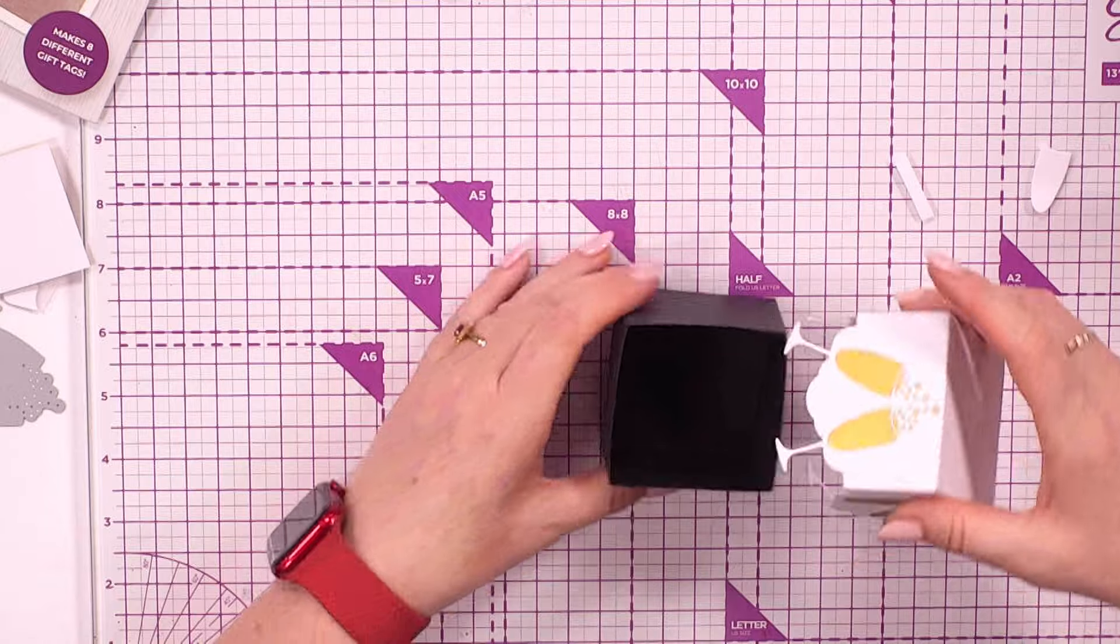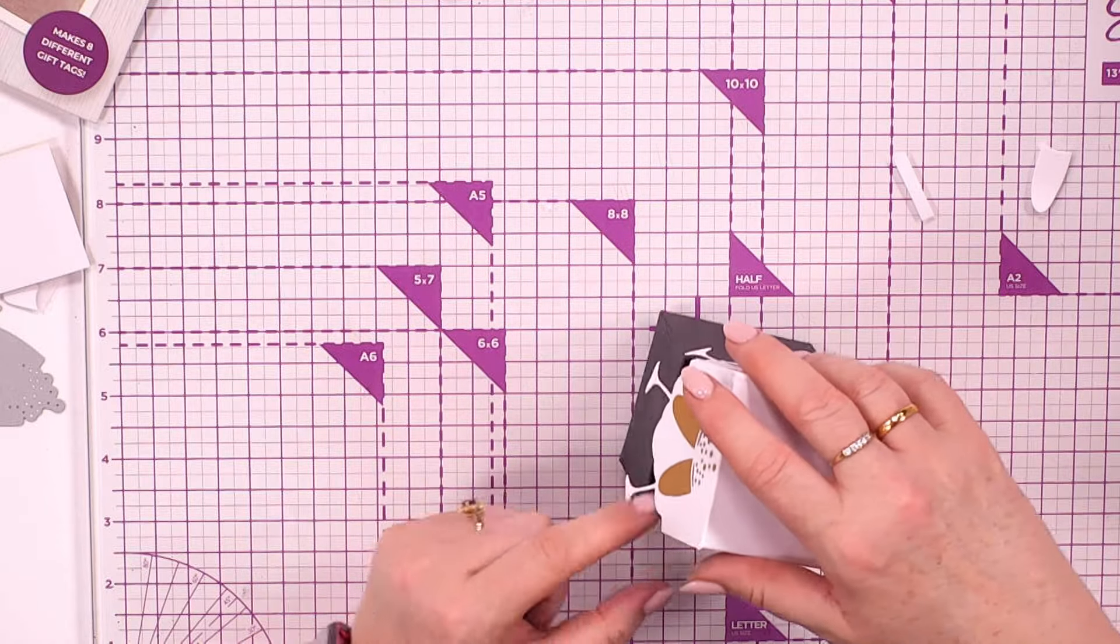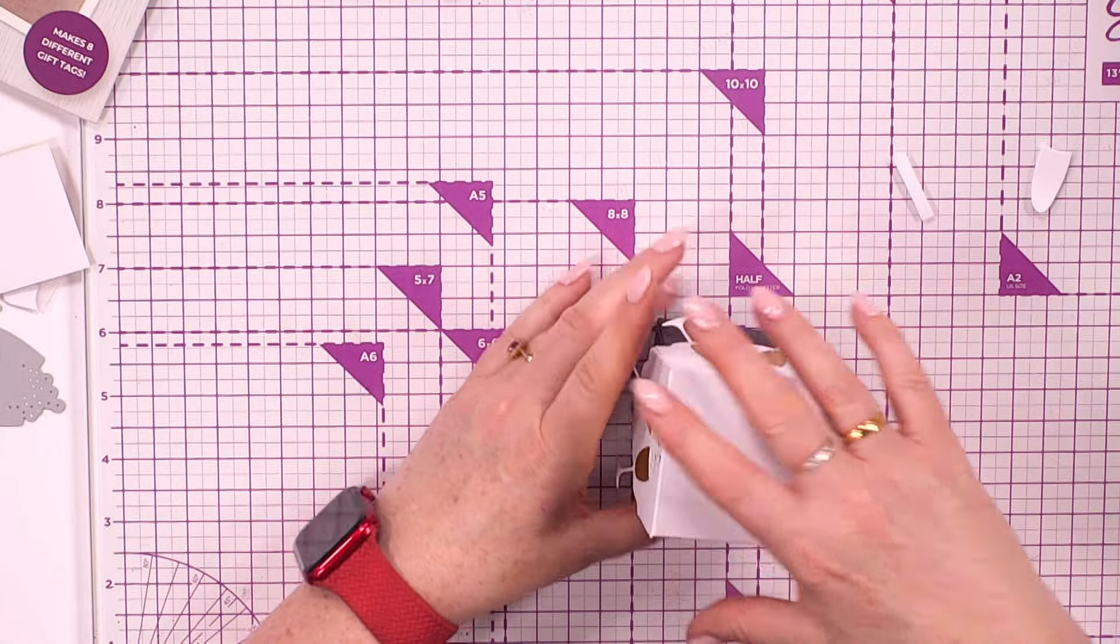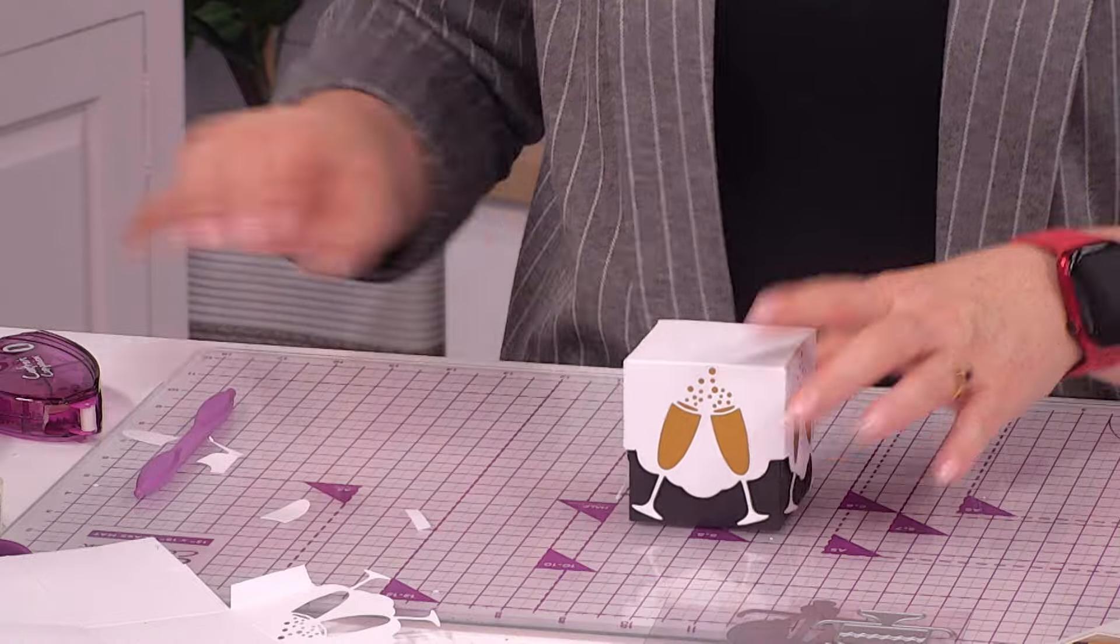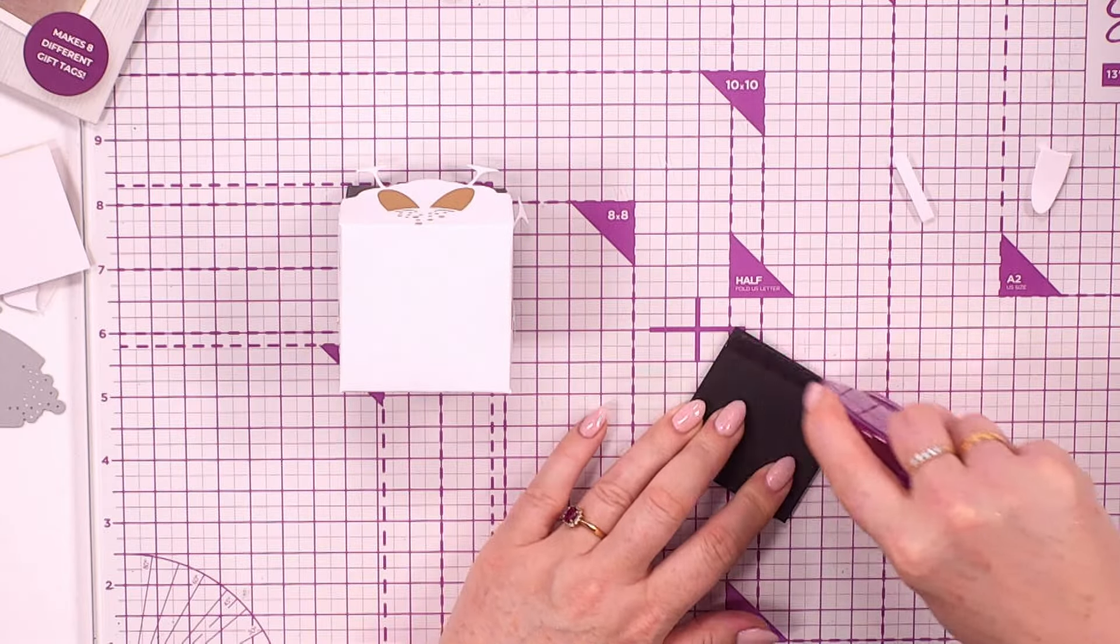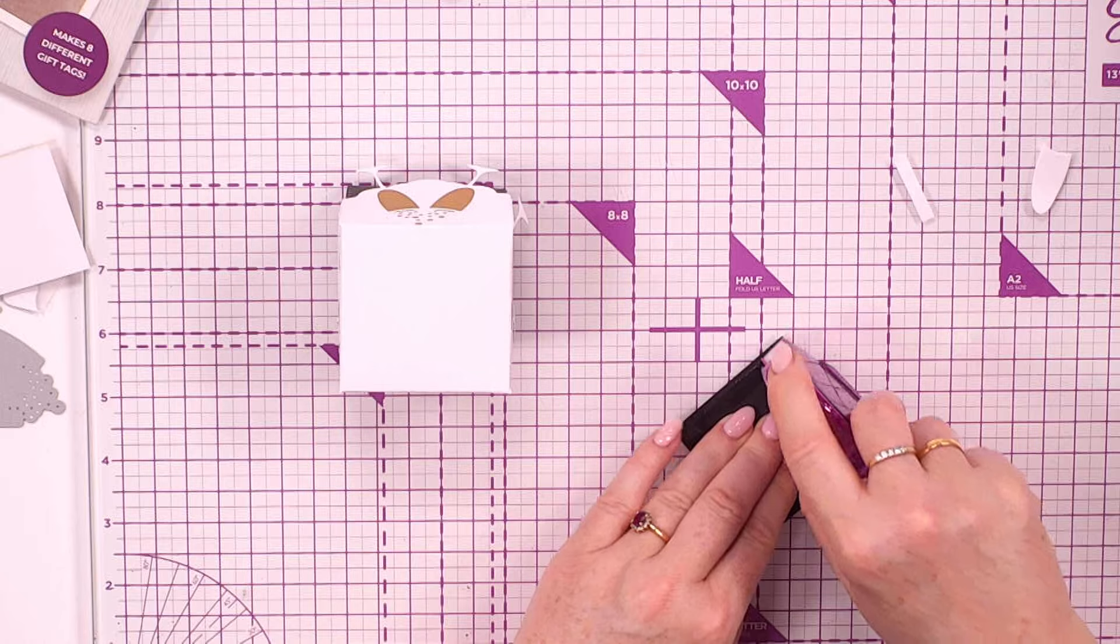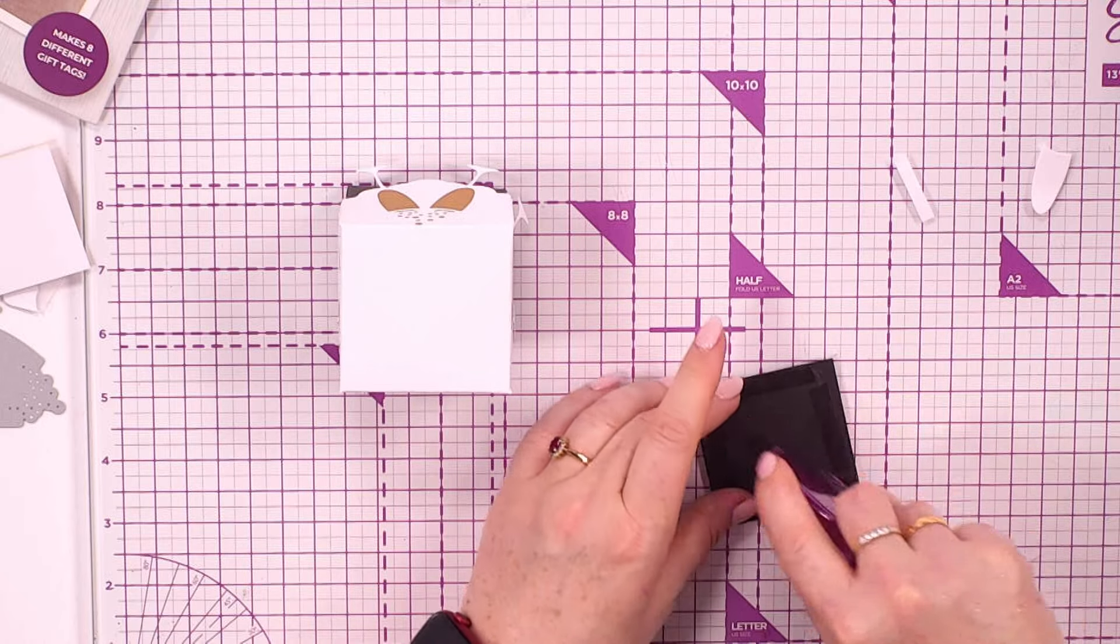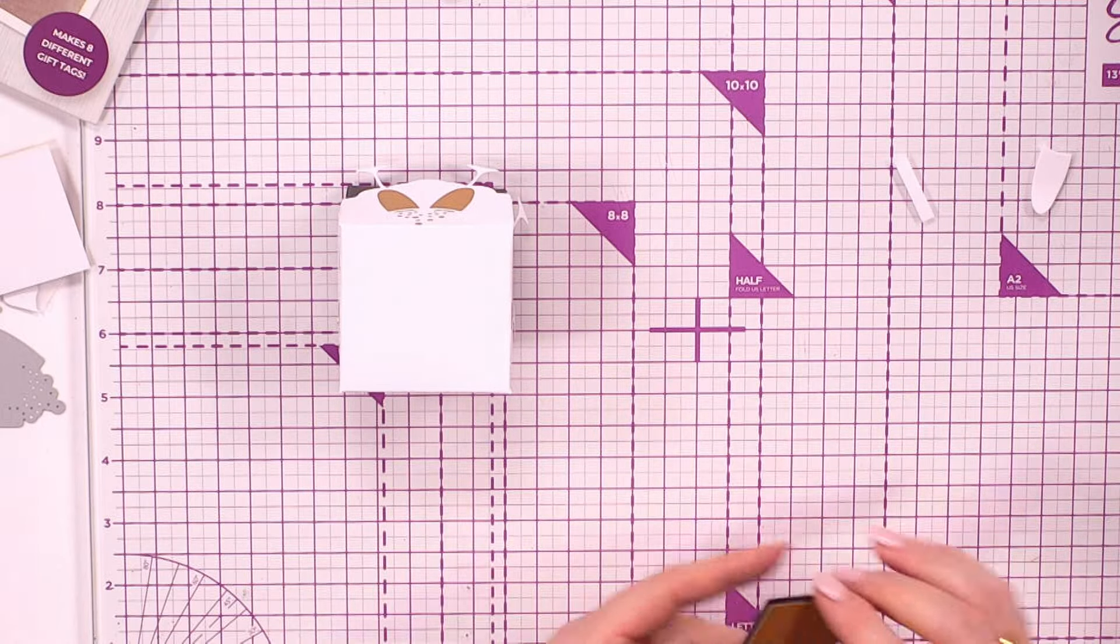So our last one into there. So that's going to then fit our box over the top. And then all I've done then is, you can see there's our little box. I've just done a little matting layer so we can place that at the top. And then I've also used one of the dies out of the launch today.